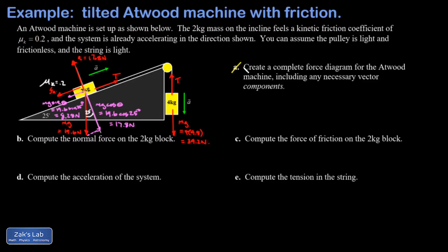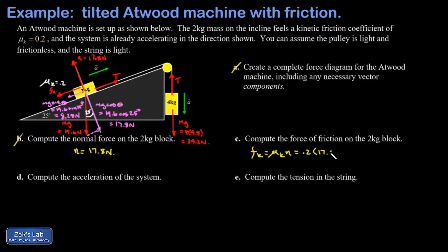We've already gone a little above and beyond in answering part b: the normal force on the two kilogram block is 17.8 newtons. For part c, the force of kinetic friction is fk = mu_k times the normal force = 0.2 times 17.8 = 3.56 newtons.